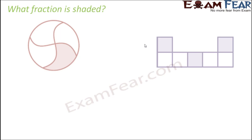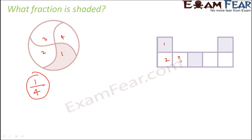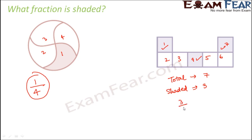Now let's look at pictures and decide what fraction is shaded. In the first example, a circle is divided into four parts. Only one part is shaded, so one-fourth of the circle is shaded. In the next image, there is an arrangement of seven squares. Three of them are shaded, so three-sevenths of this figure is shaded.